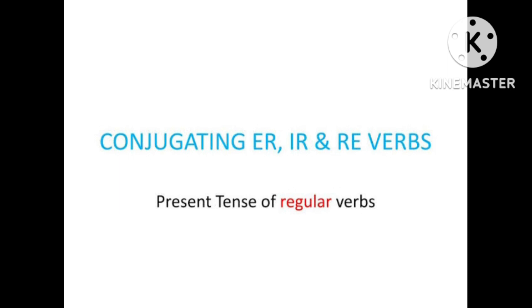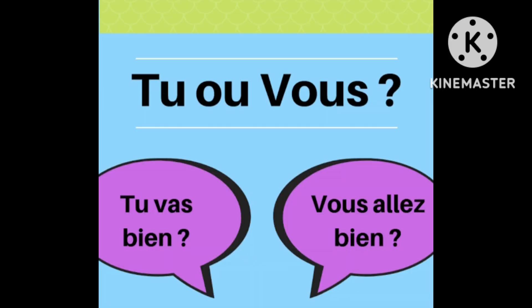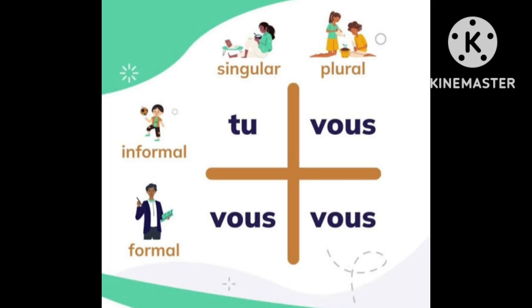In French, you have to conjugate each verb. I will tell you how to conjugate now. What you see on the screen is the pronoun sujet — it is nothing but the subject pronoun. Tu is informal, vous is formal, vous is singular, and vous is the plural form.